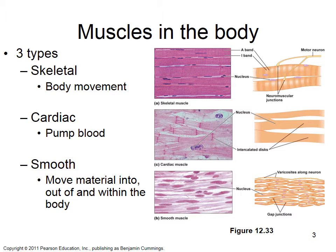Smooth muscle moves material out of and within the body. It lines arteries, arterioles, the stomach, bladder, and uterus. Smooth and cardiac muscle are involuntary — we don't consciously control them. Skeletal muscle we consciously control.